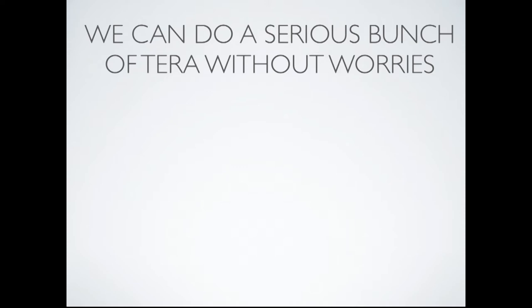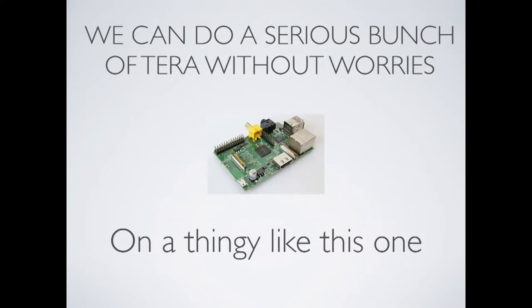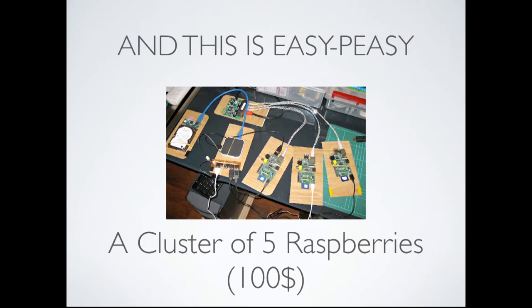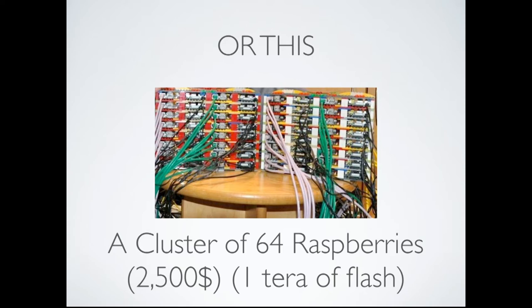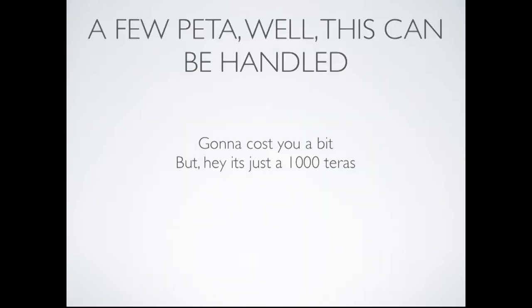We can do a serious bunch of terabytes today without any kind of worries with something like this. This is easy-peasy — a cluster of five Raspberry Pis, 100 bucks. Or a cluster of 64 of them, 2,500 bucks, and it's a tera of flash, it's fast.